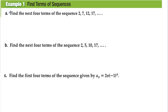Example 1: Find terms of sequences. Find the next four terms of the sequence 2, 7, 12, 17. We keep adding 5 every time, so the next four terms are 22, 27, 32, and 37.